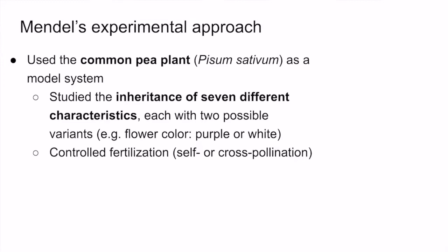Another important reason why pea plants are useful for genetic research is because they have several visible characteristics that vary. It's important for the pea plants to have different visible traits so that we can easily track how these traits are passed from one generation to another in order to deduce principles of inheritance. Mendel specifically studied the inheritance of seven different characteristics, and each of those characteristics had two possible variants. For example, one of the characteristics he studied was flower color, and the two different variants were purple and white.